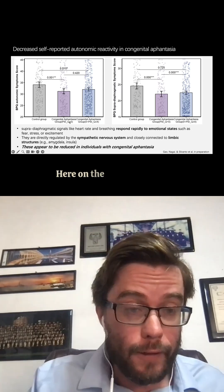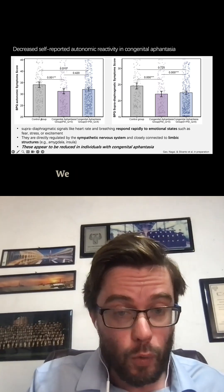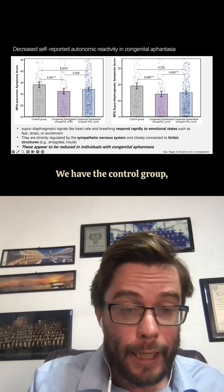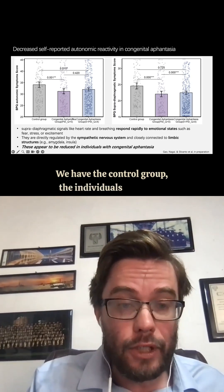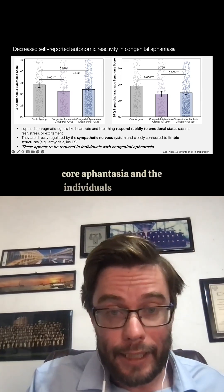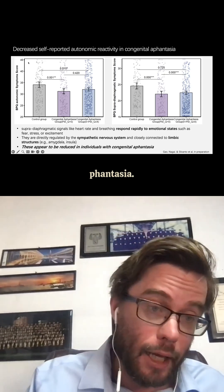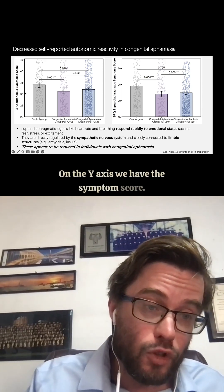So here on the x-axis we have the three groups. We have the control group, the individuals with what we call core aphantasia, and then individuals with hyper-aphantasia. On the y-axis we have the symptom score.